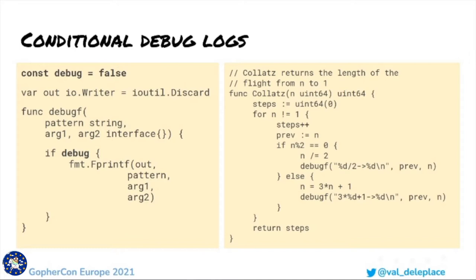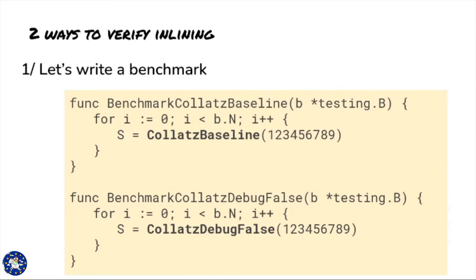What I want to achieve is a zero-cost abstraction. I want the runtime cost of debugf to be exactly zero when debug has the value false. This should be possible in theory thanks to two compiler optimizations: dead code elimination (DCE), which would remove the conditional if block here, and the inlining of the now-empty debugf function body. I can write a benchmark to measure if there's a significant performance difference between the original code without any debug statements and the new production code with debug statements that are supposed to be no-ops. If the performance is the same, then it's a good clue that inlining happened and correctly removed all of the debug instructions.